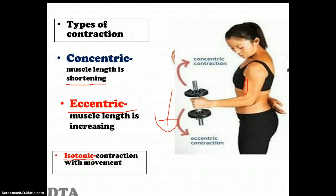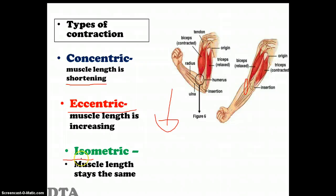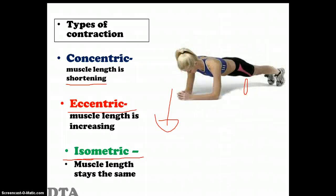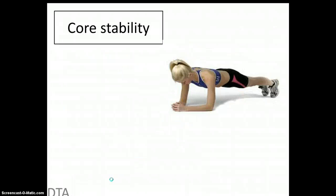If those are both contractions with movement, there must be a contraction that has no movement. This is our isometric contraction, where the muscle length stays the same — the muscle is working but doesn't change length. A good example is the plank, and a better sporting example is the crucifix in gymnastics. So in total there are three different types of contractions.